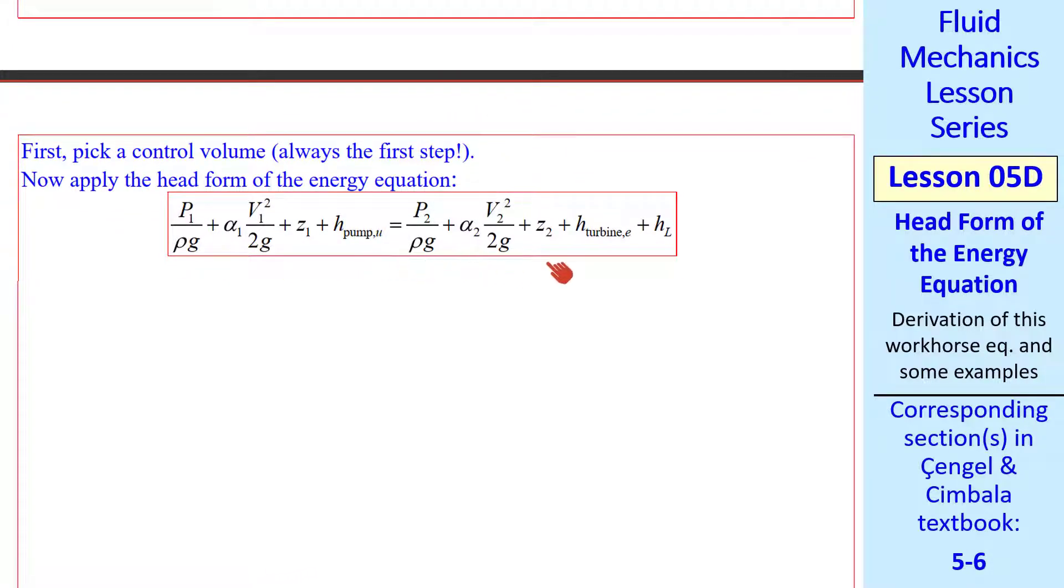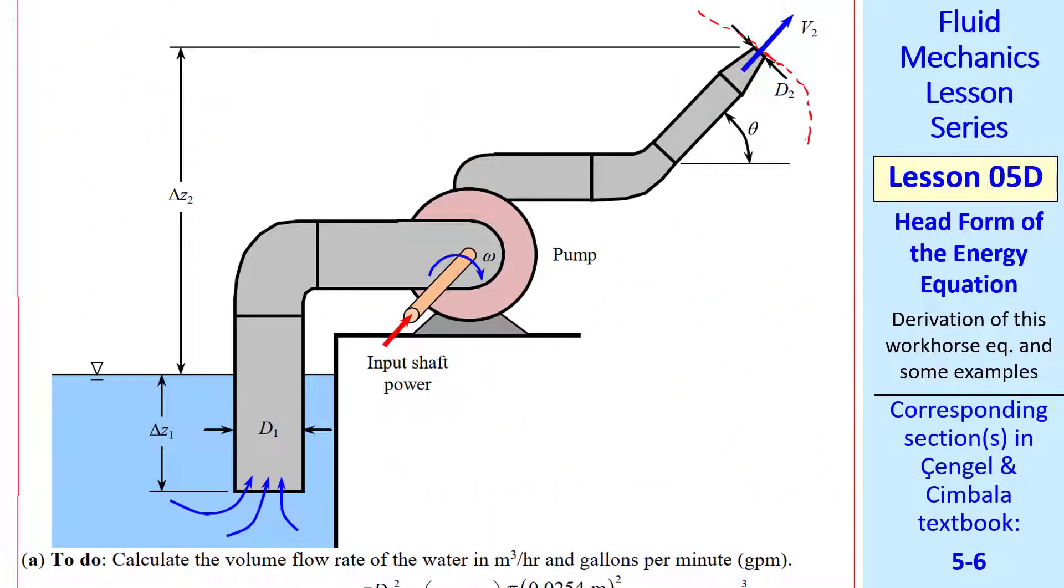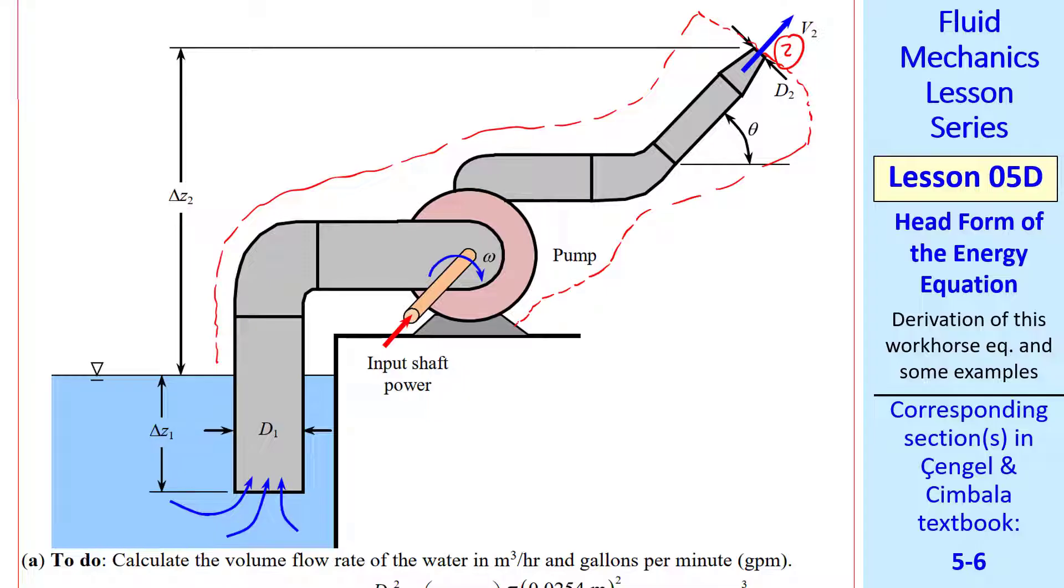The first thing in any of these analyses is to pick a control volume. And then we can apply this head form of the energy equation. So let's go back to the diagram and pick a wise control volume. We know that we have to pass our control volume through the outlet, which is 2. And then we can go around all this other stuff around the entire piping system and the pump. We know we want to cut through the shaft, but how do we handle the inlet? Most of you would be tempted to put the inlet at the actual pipe inlet and call that 1. That's not wrong. It's just not the wisest choice of control volume.